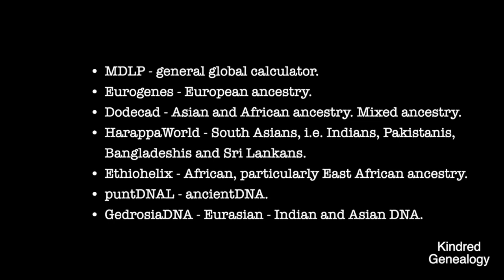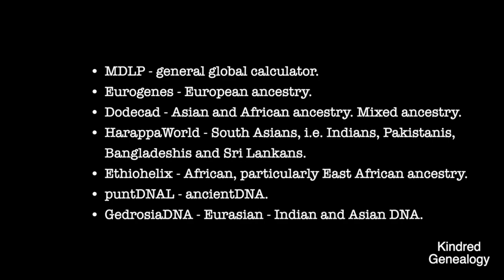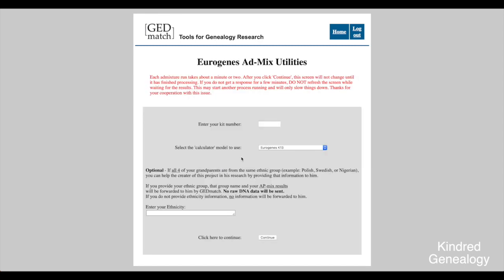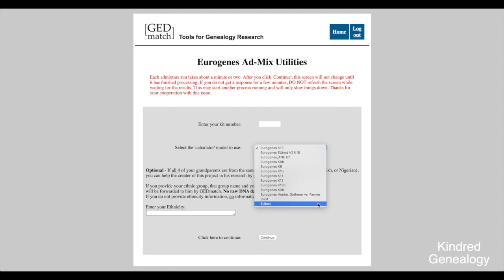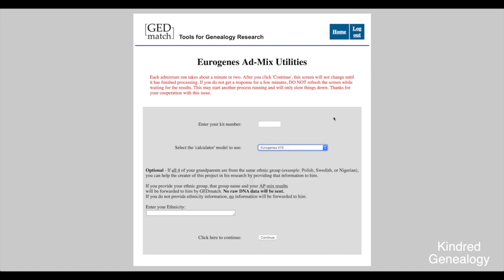You're welcome to use any of the calculators, but results are likely to be more accurate if you use the best calculator for your heritage. For example, I choose Eurogenes since I have European ancestry. You'll then need to enter your kit number and choose a calculator model. Don't freak out — it looks like there are many choices, but the best thing is to play around with different calculators. The number after the K is the number of populations in the test — for example K13 runs your data against 13 populations. More populations means more chances for inaccuracy, but just play around and see what you get.